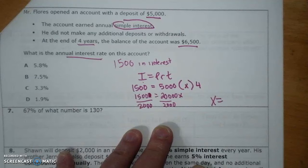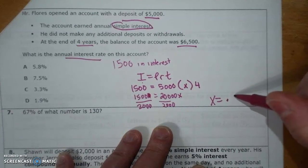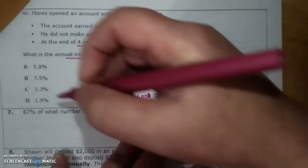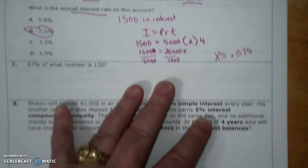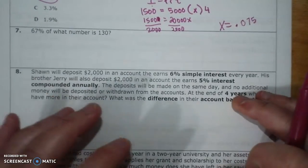X equals... sorry, keep saying 15,000, then it's 1,500 divided by 20,000. Making sure I have all my zeros. And I get X equals 0.075, and that is a percentage of 7.5%.